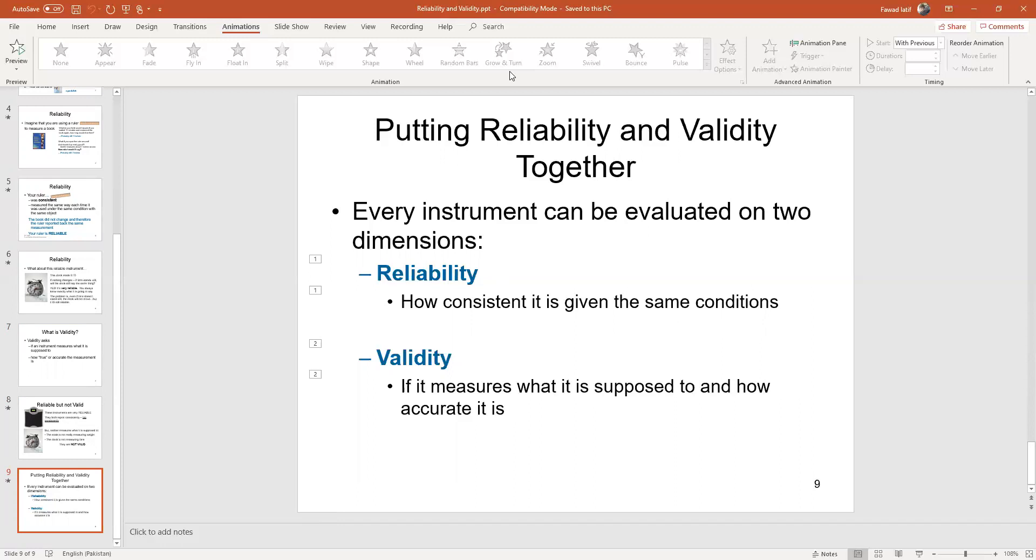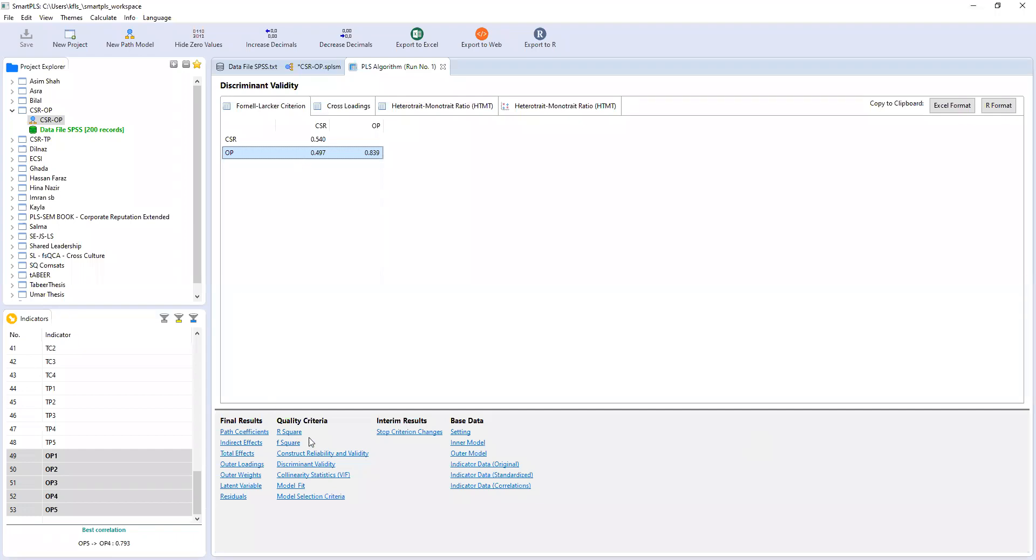Now in SmartPLS, when we did our model, we tried to assess the reliability and validity of our scale. So if we see, Cronbach's alpha and composite reliability - these are two ways through which we can assess reliability, whether or not our scale will give us consistent results.